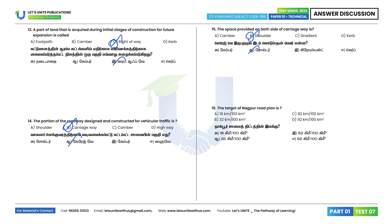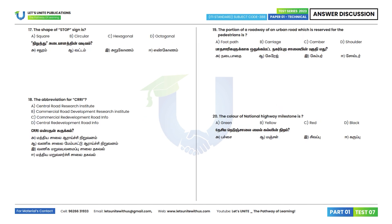16th question: The target of the Nagpur Road Plan is 16 km per 100 km². Option D is the correct answer. 17th question: The shape of a stop sign is octagonal. Option D.